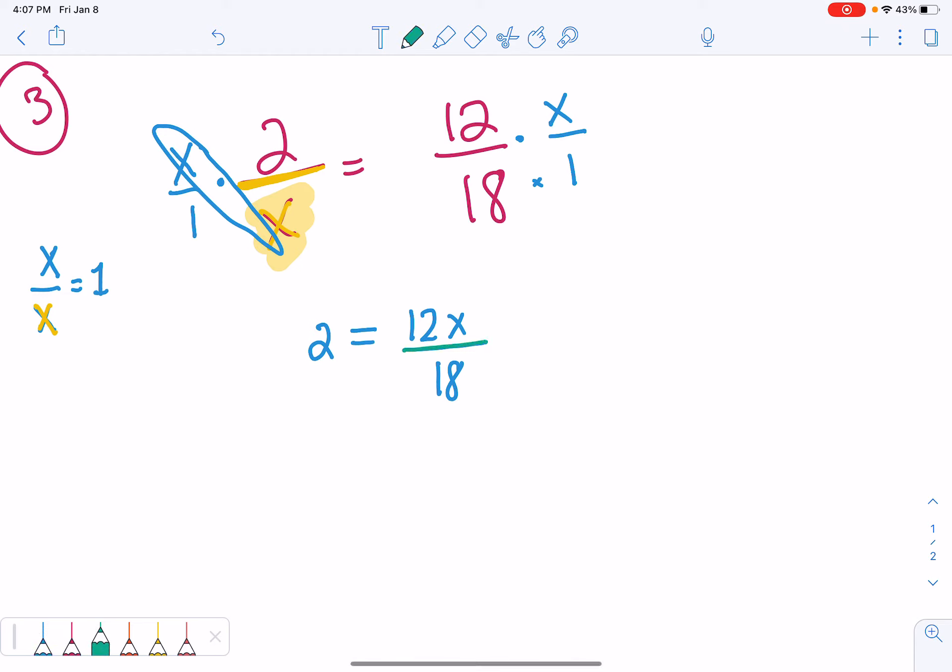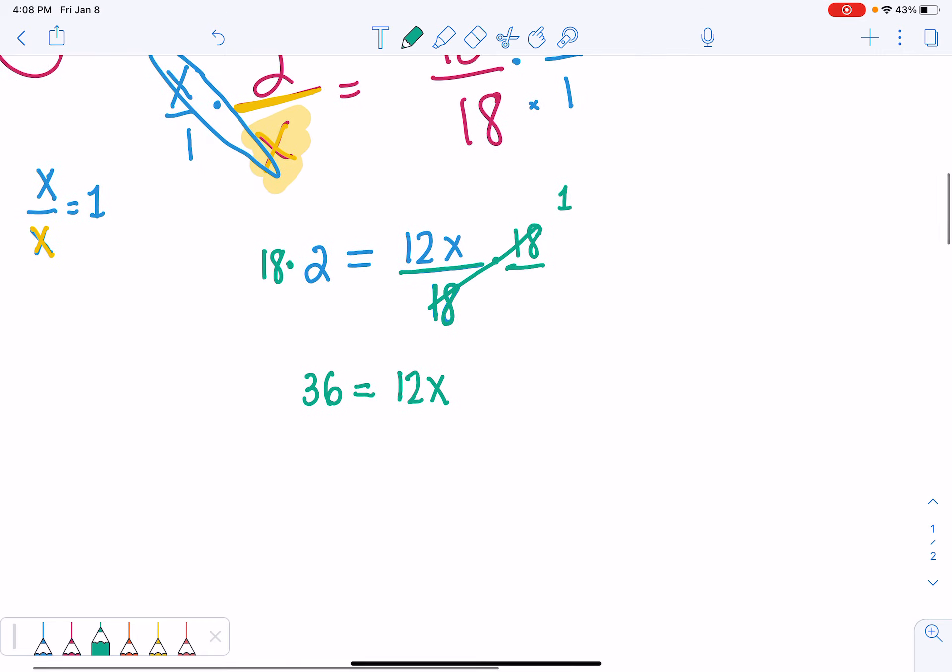Now, to undo and solve for x, we're dividing by 18. So, we want to undo and multiply by 18 on both sides. So, on the left side, we have 36. On the right side, we have 12x because 18 divided by 18 equals 1. Our last algebra step is to divide by 12. And we should get 3. 3 equals x.